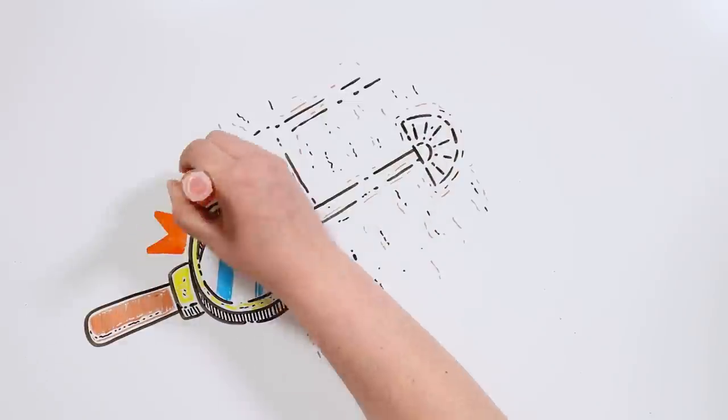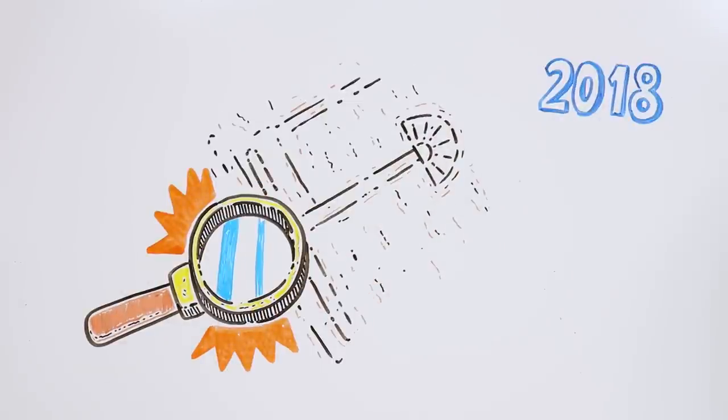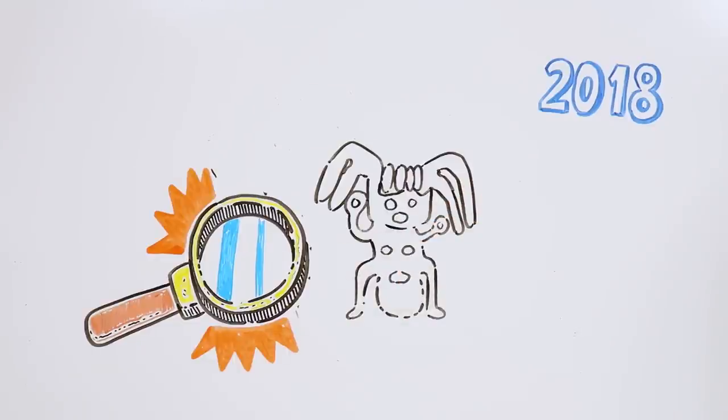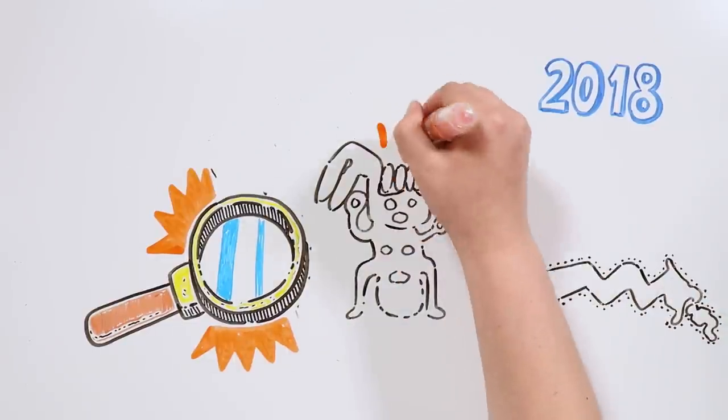The Nazca Lines are still being studied to this day, and in 2018 several Japanese experts discovered, through the use of state-of-the-art technology, a different group of geoglyphs that had not been discovered yet.